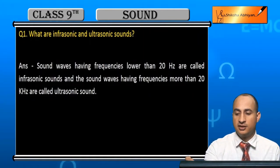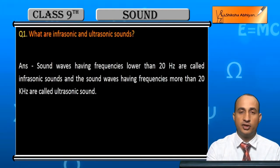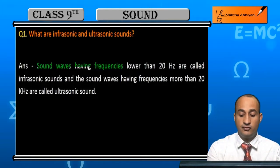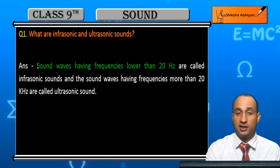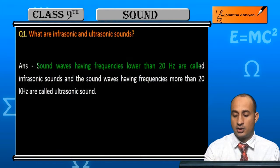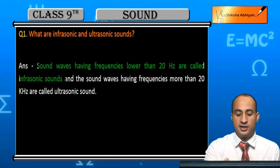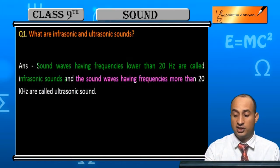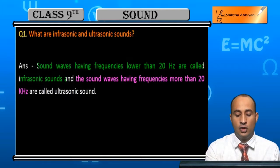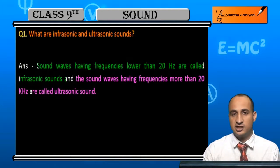The first question is: what are infrasonic and ultrasonic sound? Sound waves having frequencies lower than 20 hertz are called infrasonic sound. Sound waves having a frequency more than 20 kilohertz, or 20,000 hertz, are called ultrasonic sound. So these are infrasonic and ultrasonic sound.